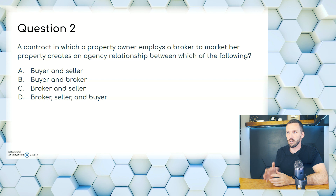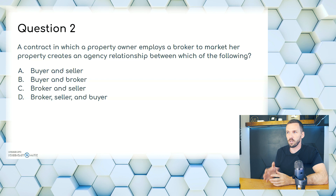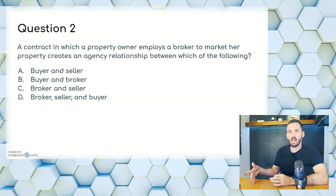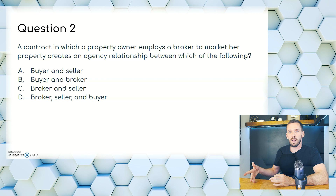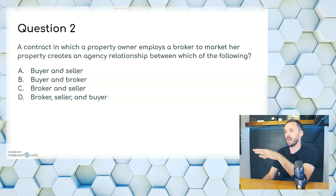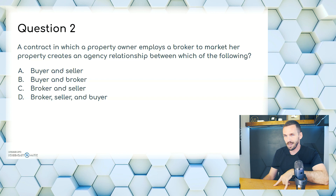Question 2. A contract in which a property owner employs a broker to market her property creates an agency relationship between which of the following? A, buyer and seller; B, buyer and broker; C, broker and seller; or D, broker, seller, and buyer. A property owner is a seller, so the answer is C: broker and seller.